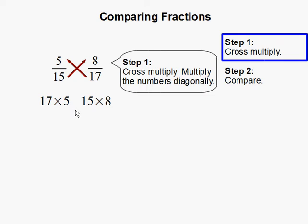It is also important to place the number where the arrow is pointing. 17 times 5 is going to be on the left side and 15 times 8 is going to be on the right side. 17 times 5 is 85. 15 times 8 is 120.